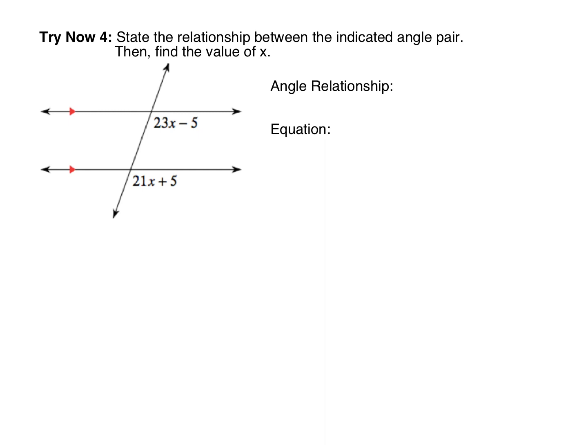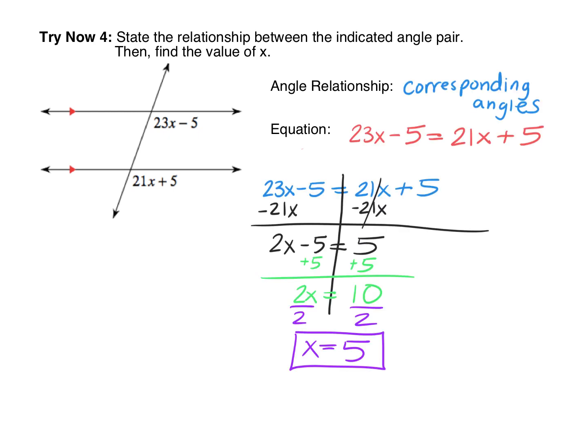Here's a try-now for you to work on your own. Begin by stating the angle relationship, then determine whether to set the angles equal or add them to 180. The equation depends on the type of angle relationship. The angle relationship is corresponding angles, which are congruent. So we set 23x minus 5 equal to 21x plus 5 and solve the algebra — x equals 5. This concludes lesson 2.1, day 2. Thanks for watching and good luck practicing problems on your own.